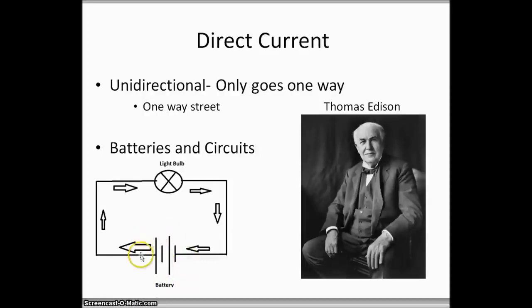So if we take a look down here at the bottom, we have our battery and our circuit. The battery emits electrons, they flow through, they keep going, and they go through this one way. They just keep cycling through this one path. That's all they do. One way, unidirectional.